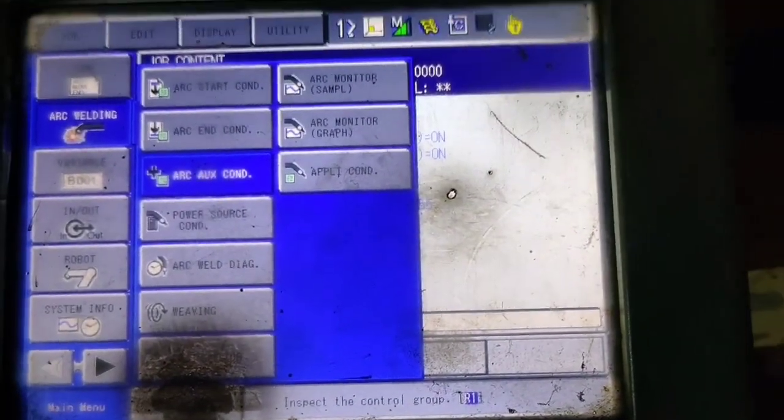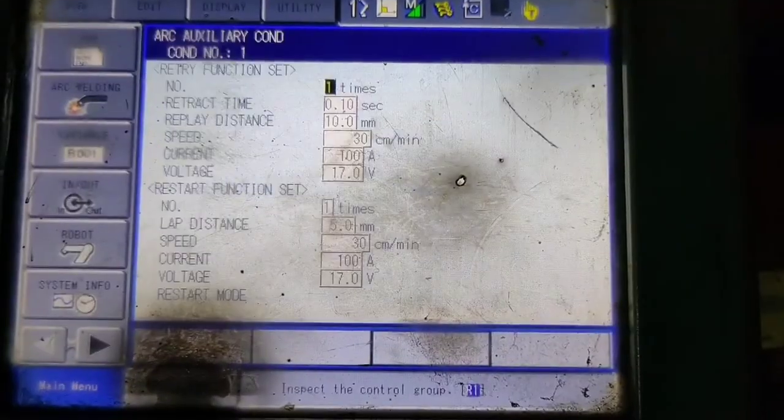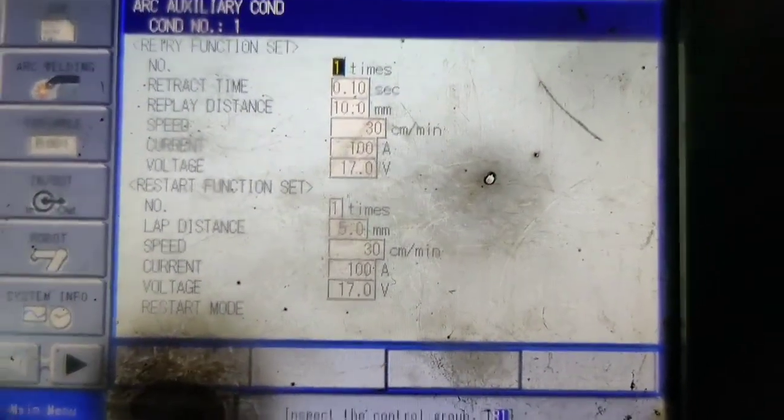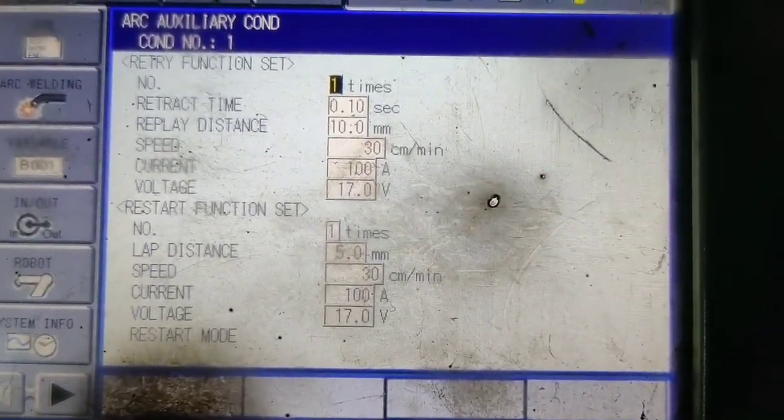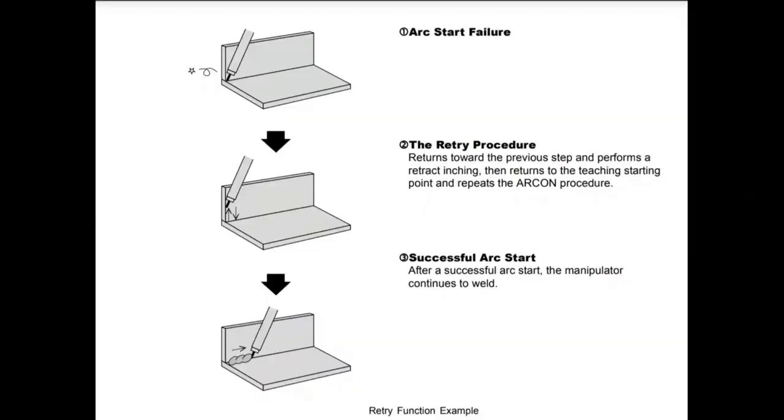Then go in arc auxiliary condition. When you click on that, this display will appear in your robot teach pendant. First we have started with retry function. The return toward the previous step and perform a retract inching, then return to the teaching starting point and repeat the arc on process.